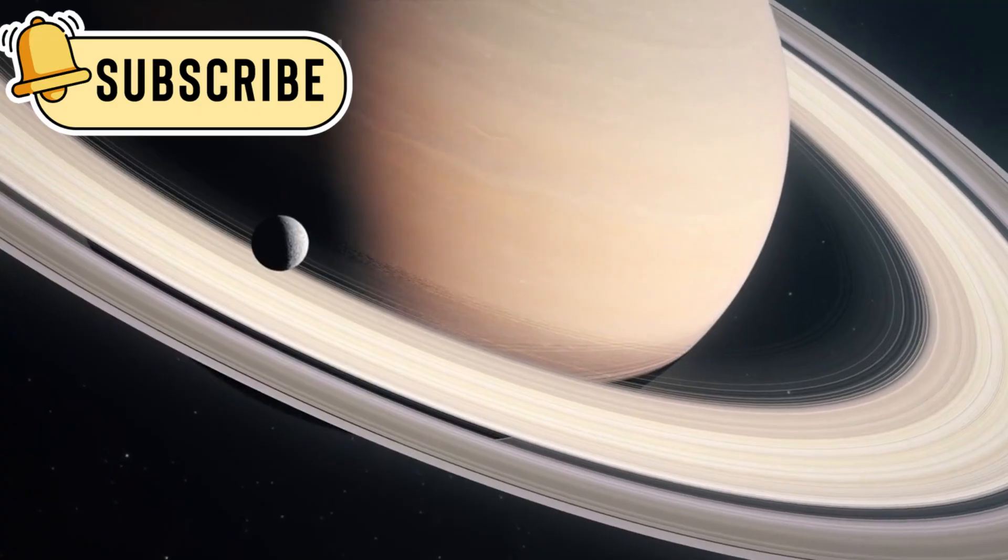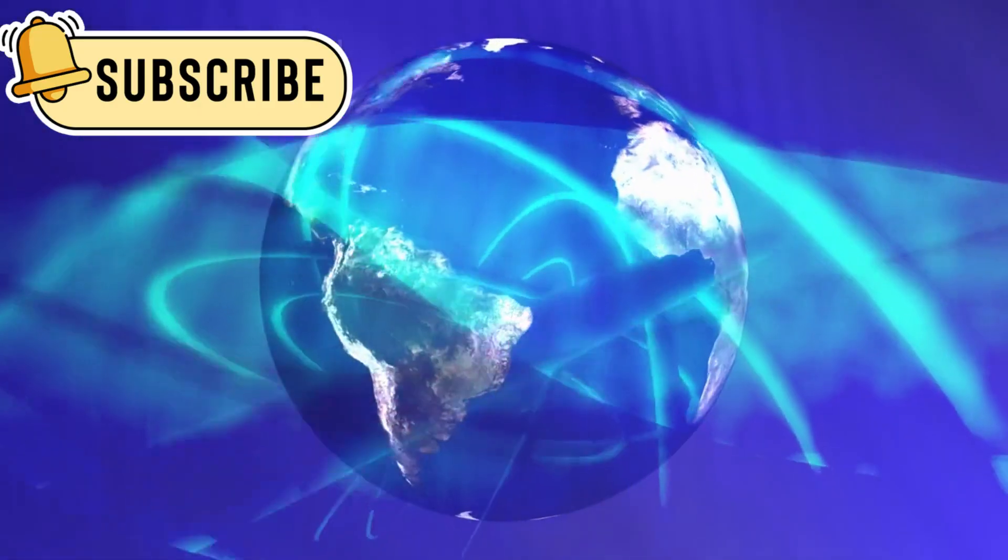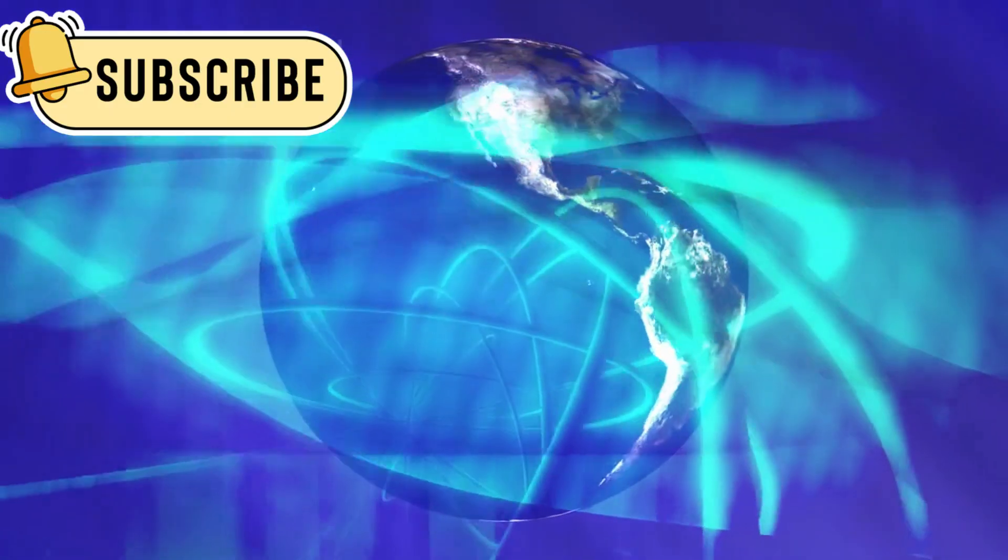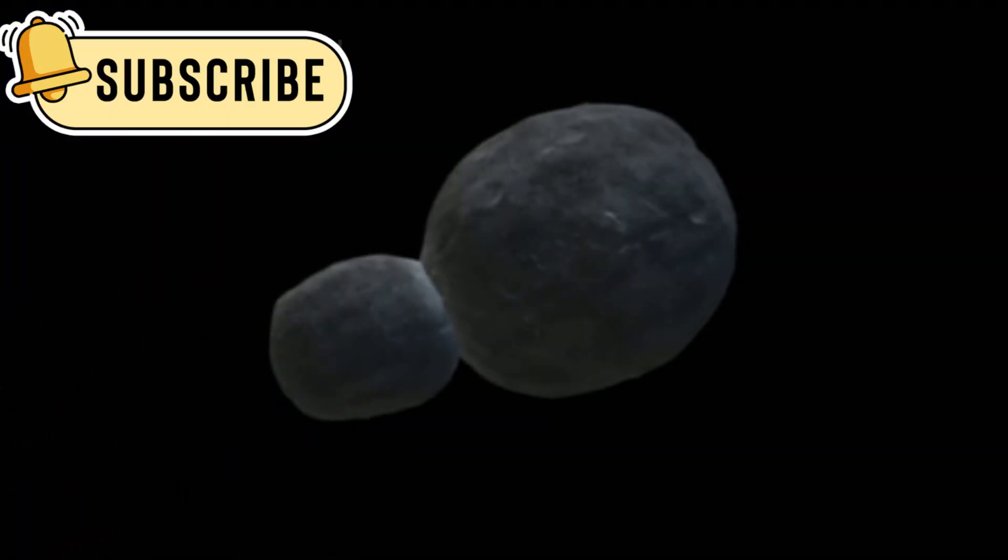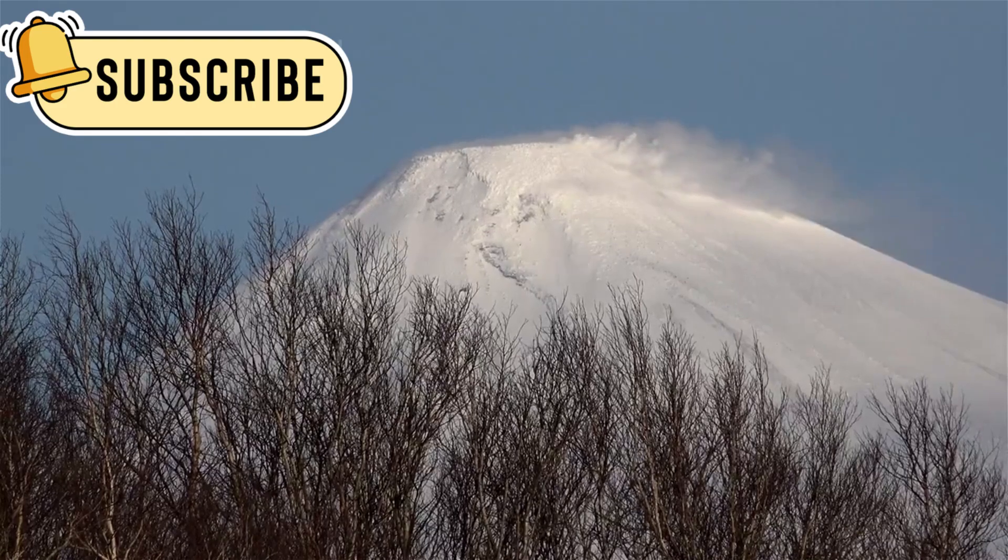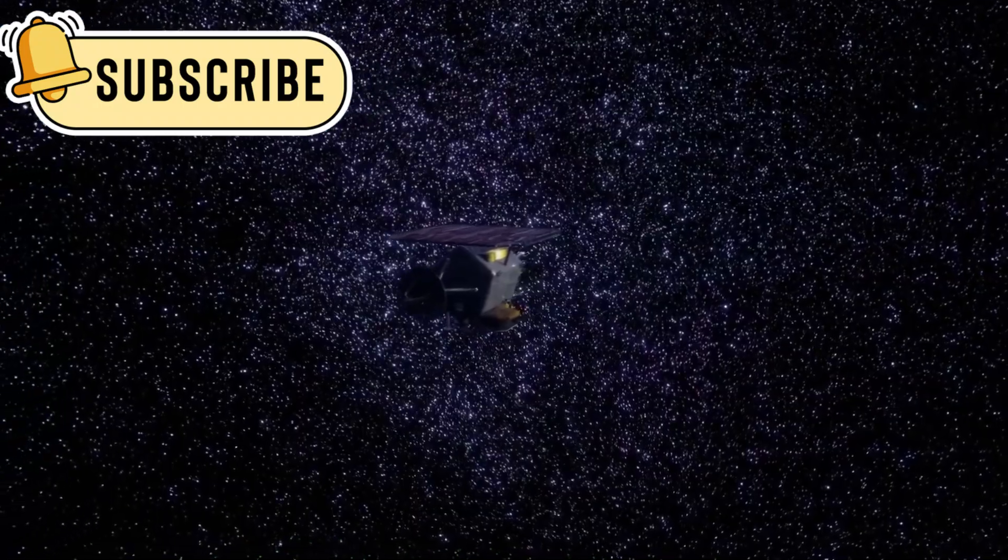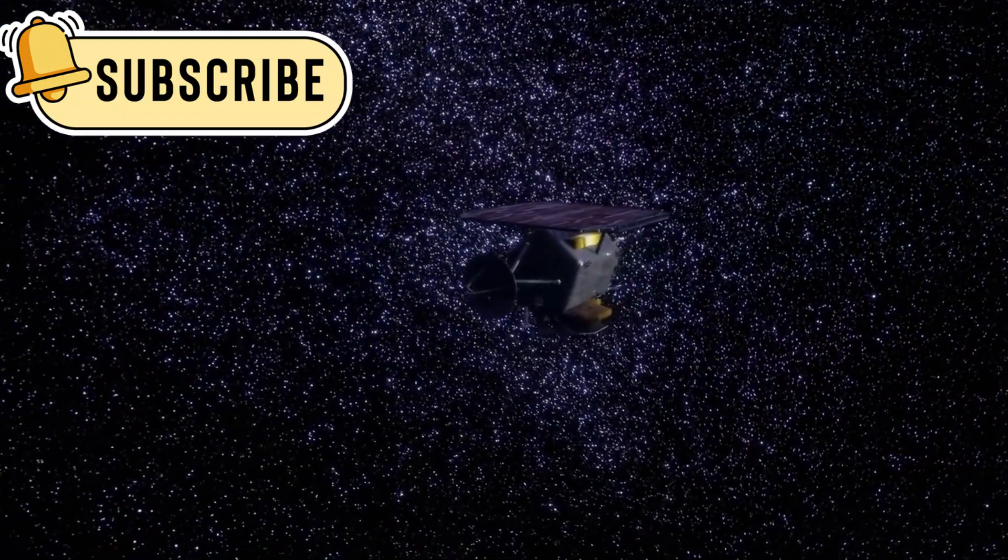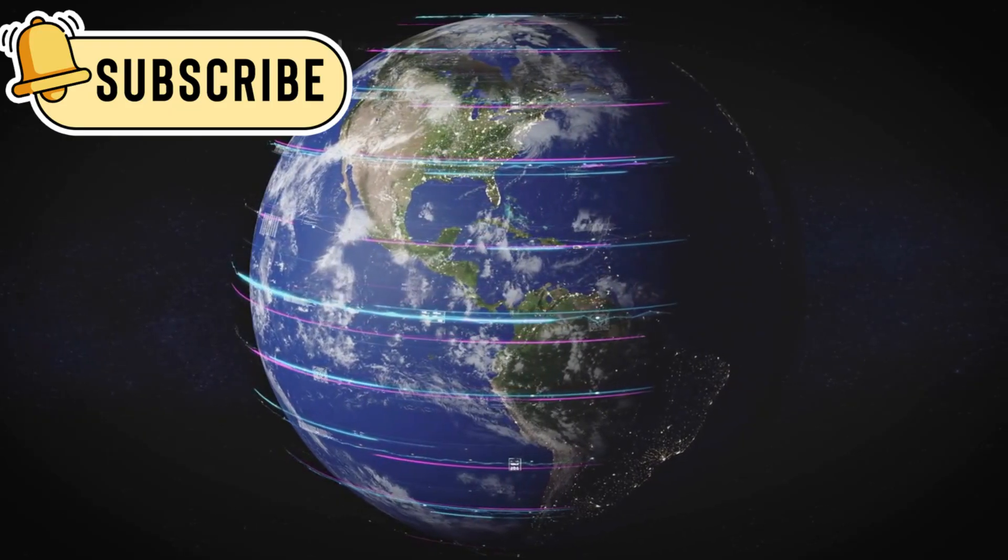Pluto remains a special object of study. Its reclassification started debates about what defines a planet, and its orbit keeps scientists guessing. The spacecraft New Horizons flew by Pluto in 2015, giving us the best images we've ever seen. It showed icy mountains, frozen plains, and a thin atmosphere. This flyby changed how we see Pluto. It proved that even far-off dwarf planets can be rich and active worlds.